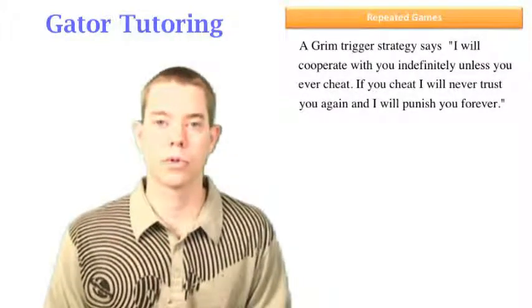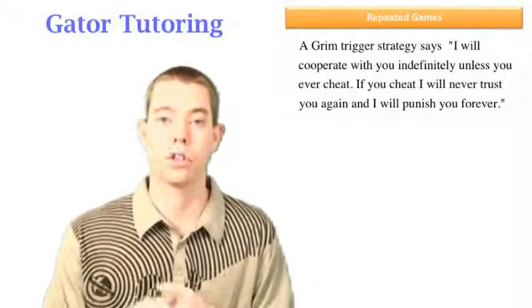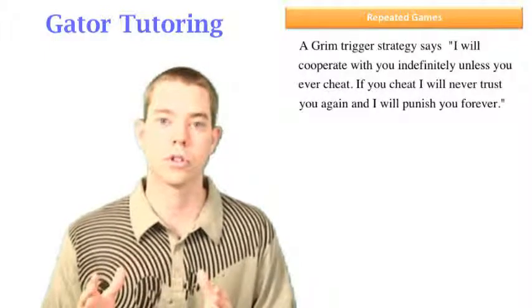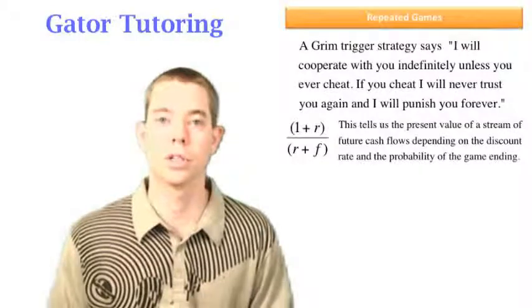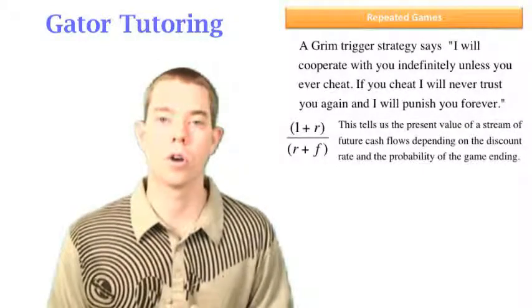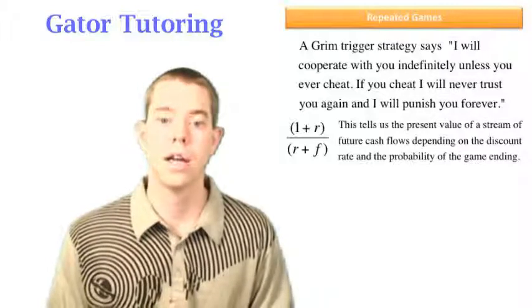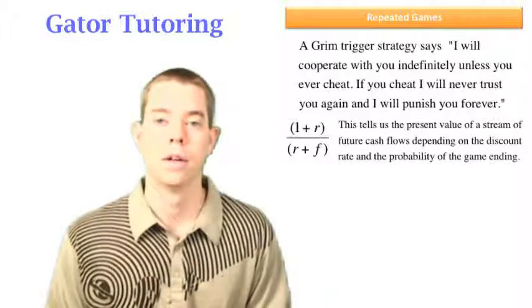Now, with Grim Trigger in mind, we know that if we cooperate, we're going to have cooperation every period. So we need to have some device to bring a future stream of cash flows to the present value. And that's what we're going to use this for: (1+r)/(r+f). This tells us the present value of a stream of future cash flows, and it depends on the discount rate and the probability of the game ending.